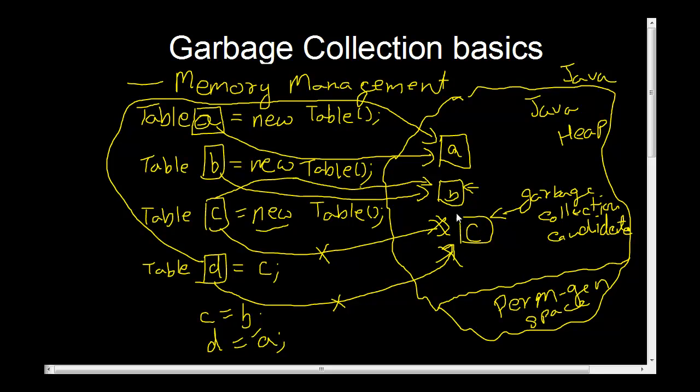So every few minutes, depending on some configuration, Java has a garbage collection thread. A thread is basically a program, a small program. It runs and it looks at this heap and sees any object which does not have any reference pointing to it, and just deletes them and releases that memory to the Java heap.